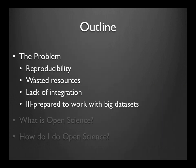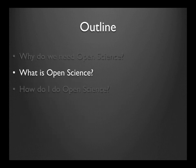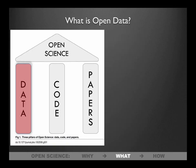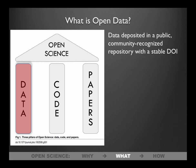So these are the problems we're trying to work on: the reproducibility problem, wasted resources, lack of integration and reuse of data, and the fact that our scientists and trainees are possibly ill-prepared to work with very large datasets. What is this open science that's going to address these problems? Gorgolewski and Poldrack have a great paper laying this out: in their framework, open science is a combination of three things — open data, open code, and open papers.